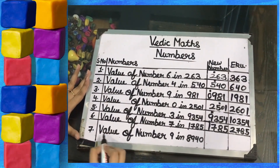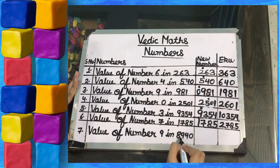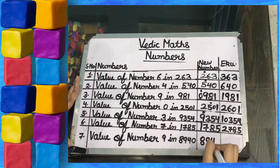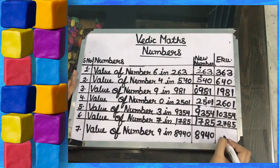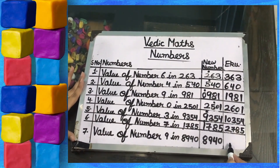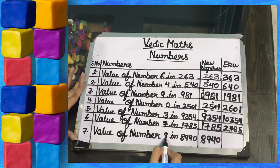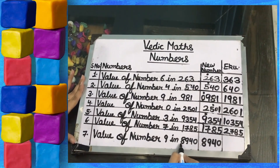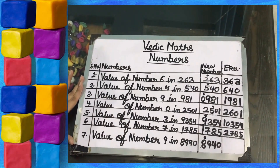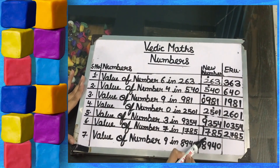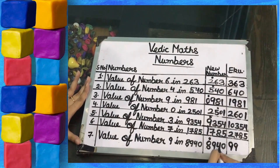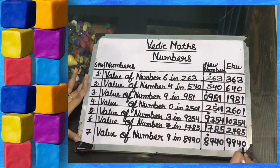The last part — value of number 9 in 8940. We write the number 8940. We need to find the Ekadiken Purven, which means plus 1 in the previous digit. The previous digit of 9 in 8940 is 8, so we put a dot on 8. This dot means plus 1, so 1 plus 8 is 9. This 9, 4, and 0 all remain the same. So the answer is 9940.